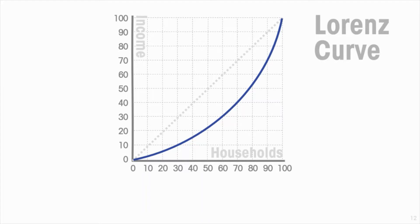Of course, if we weren't using quintiles or thirds, we would get a smooth Lorenz curve when representing percentiles or each household individually. A realistic Lorenz curve with a sufficient number of data points would look smooth. But we still have only a visual representation — we still have to look at the Lorenz curve, perhaps compare it to other economies, to see how unequal the distribution of income is. What we want is a single measure.